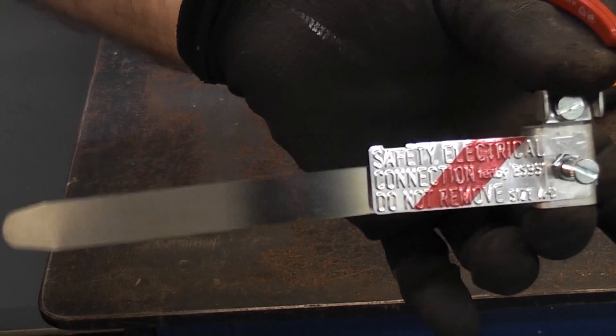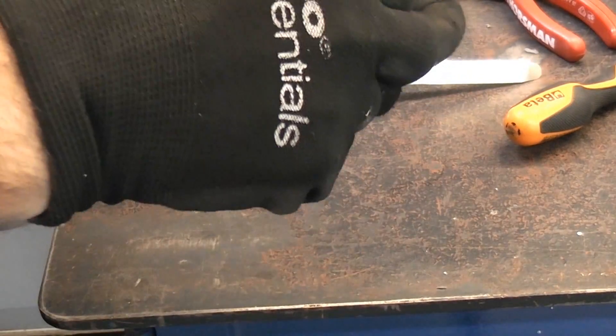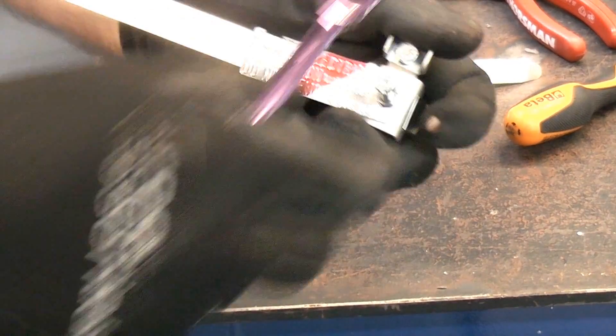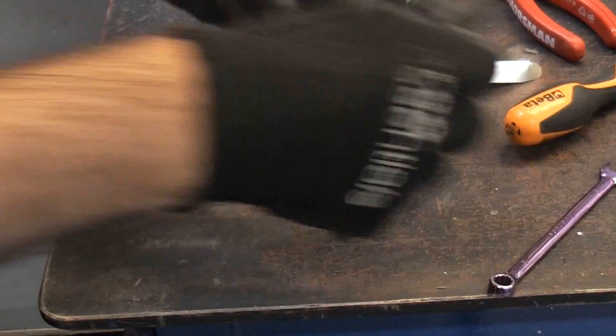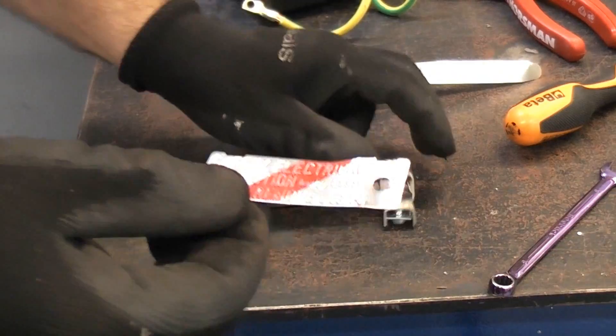When you buy these they are usually assembled like so. What we need to do is undo that lock nut, which in this case is an 8mm, and we're just going to remove the screw. So that is the warning label telling people not to remove it.